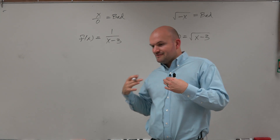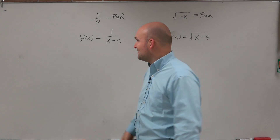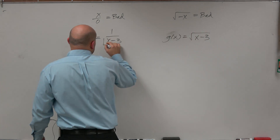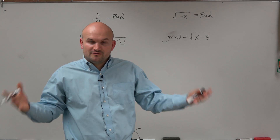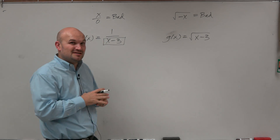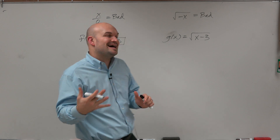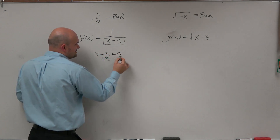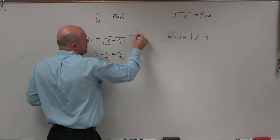For the reciprocal function, dividing by 0 is bad. So we want to find the number that is going to make the denominator equal to 0. This works for all reciprocal or rational functions. To determine the domain, we find the values that are not going to be in the domain, since there are infinitely many real numbers. So we set x minus 3 equal to 0, add 3 to both sides, and get x equals 3. When x is 3, the denominator equals 0, which is bad.